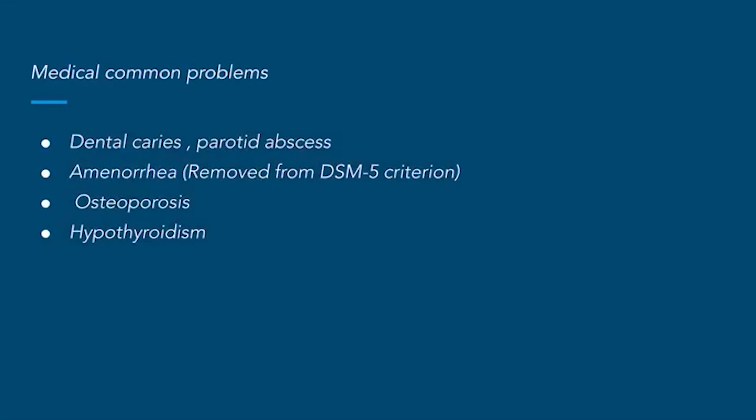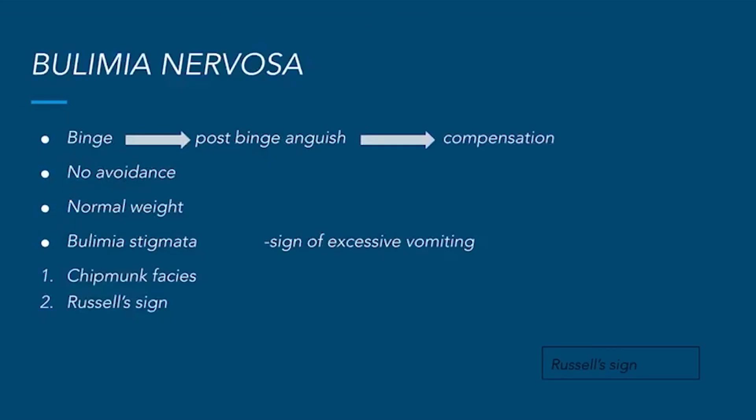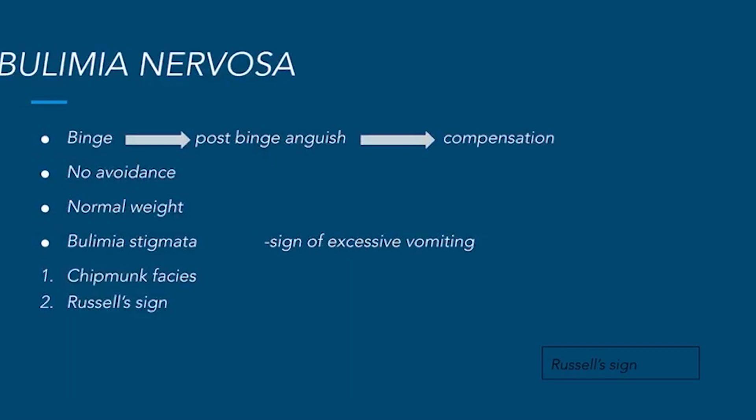The binge type involves binge eating followed by post-binge anguish and compensation. Common medical problems include dental caries, parotid abscess — primarily due to self-induced vomiting — amenorrhea (which was in the diagnostic criteria but has been removed from DSM-5), osteoporosis due to decreased bone density, and hypothyroidism due to decreased levels of T3 and T4 in the blood.